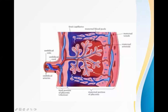In the umbilical cord, the blue structures are the umbilical arteries and the pink structure is the umbilical vein. The umbilical vein carries relatively oxygenated blood towards the baby, and the umbilical arteries carry deoxygenated blood towards the placenta. This is a bit opposite to what we normally learn — that veins carry deoxygenated blood and arteries carry oxygenated blood.